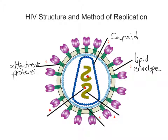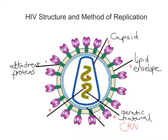Number four refers to the yellowish-green central component of the HIV structure. This is its genetic material. More specifically, this genetic material is in the form of RNA — not DNA, but RNA. I do have separate videos on the difference between DNA and RNA, RNA being ribonucleic acid. That is what the genetic material is in this virus.